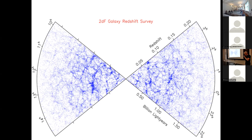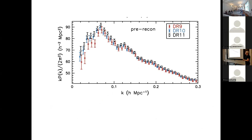You can take all this data and from that calculate the two-point correlation function of points, then convert it to Fourier space and get the so-called matter power spectrum out. Here is an example from a relatively recent galaxy survey. We can nowadays measure this quite precisely to just a few percent precision over a wide range of scales going out to physical scales corresponding to many hundreds of megaparsecs.